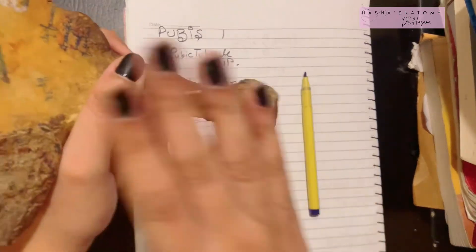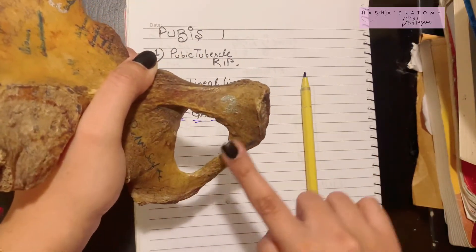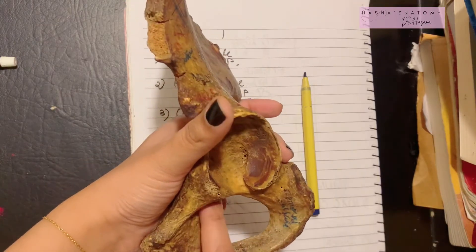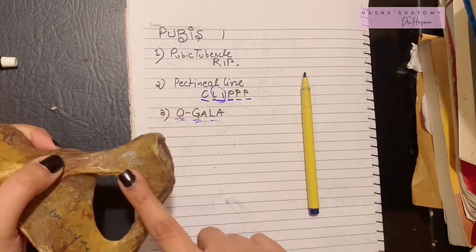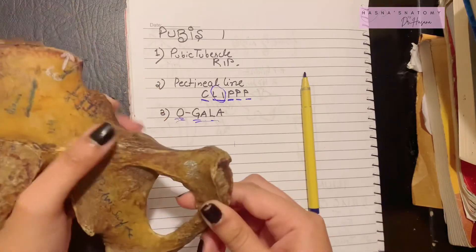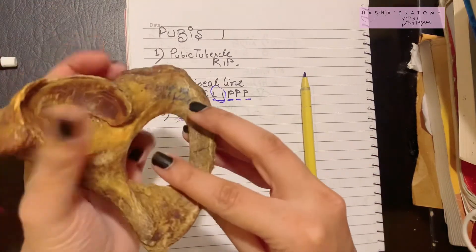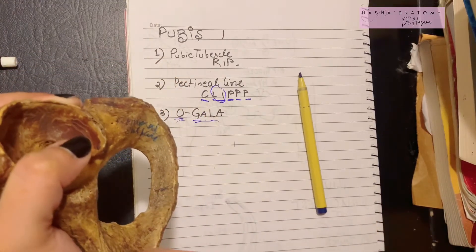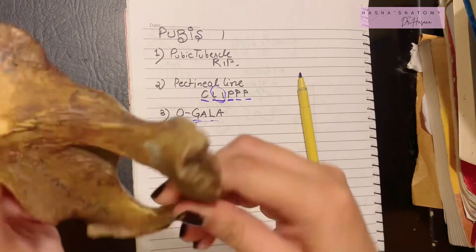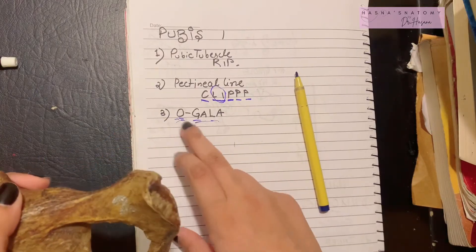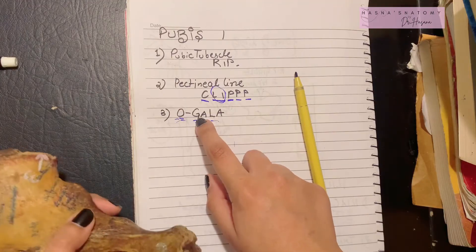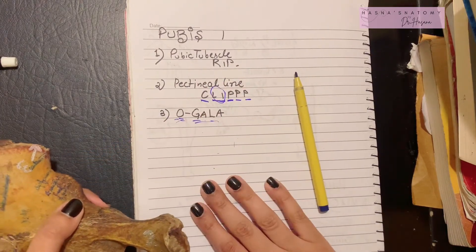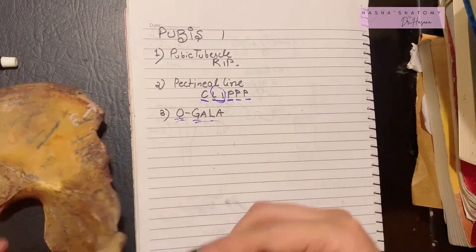The mnemonic for the entire pubic bone's attachments is OGALA. The internal surface of the pelvic bone gives origin on its margins to the obturator internus muscle, and the outer surface of the obturator foramen gives origin to the obturator externus. G stands for gracilis; the first A is for adductor longus; the second A is for adductor brevis; and L is for levator ani on the inner surface. In the next video we will cover the ischium bone.